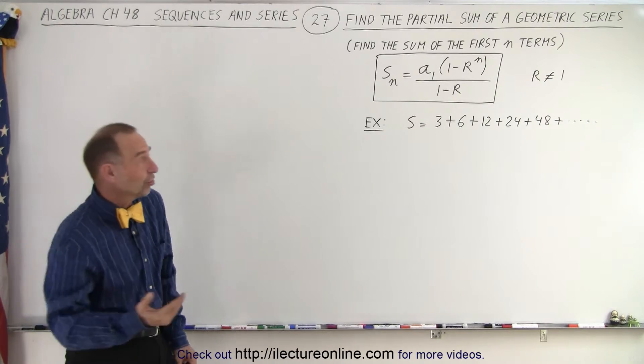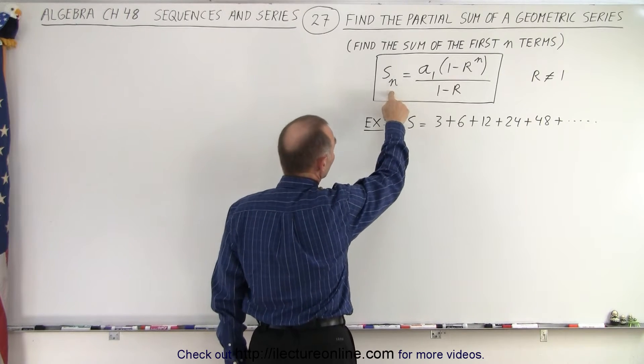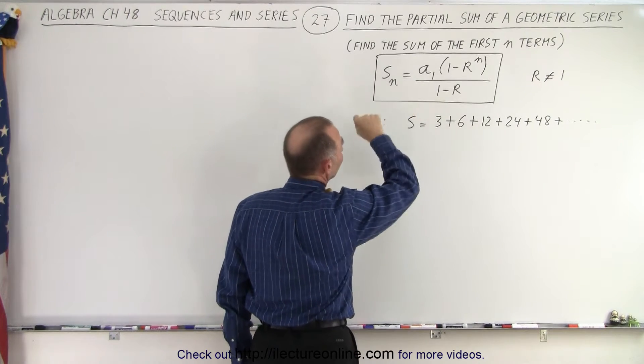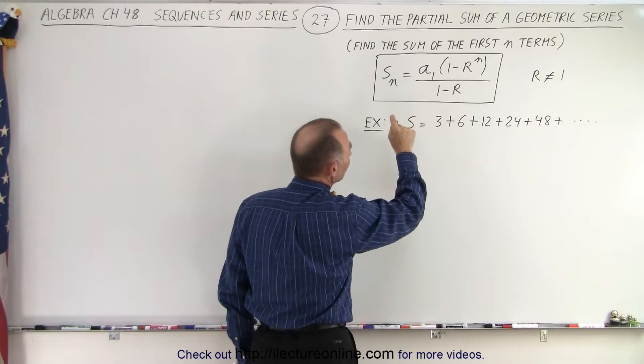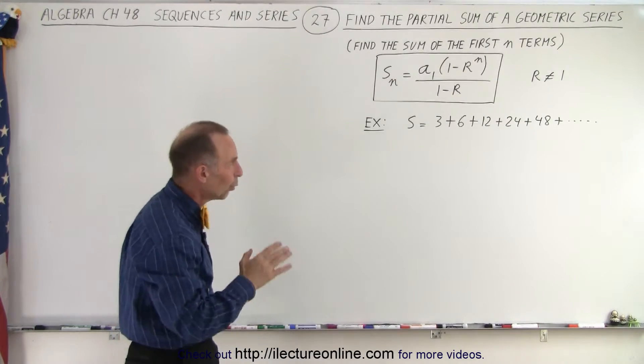To find the partial sum, the sum of the first n terms is equal to a₁ times the quantity (1 - r^n) divided by (1 - r). Of course, r cannot equal 1.